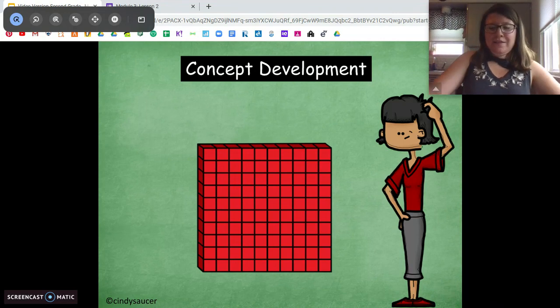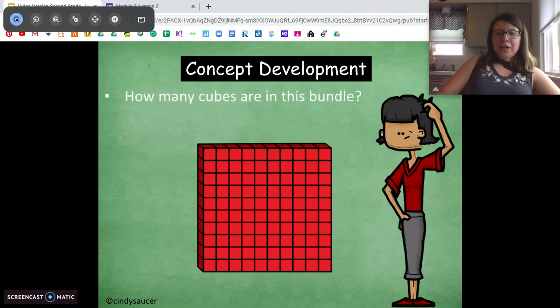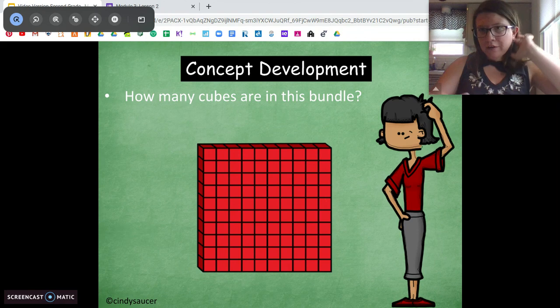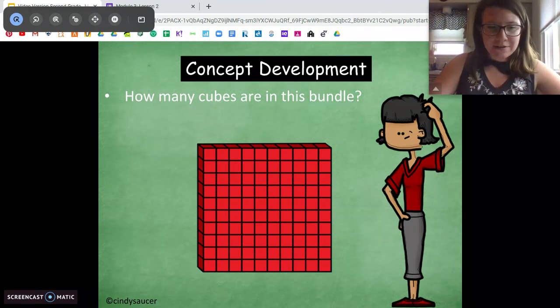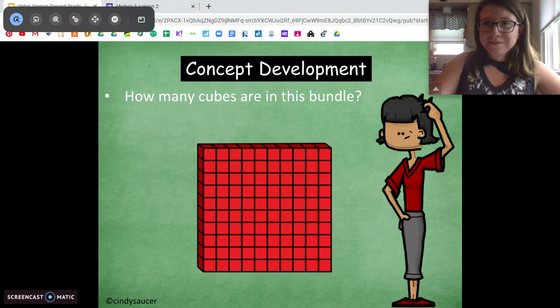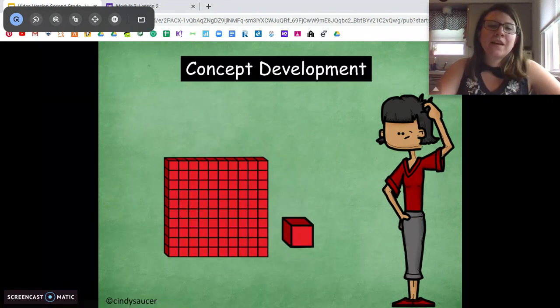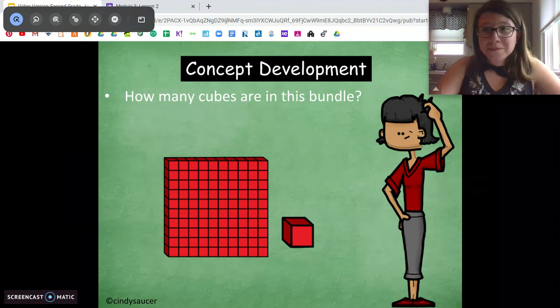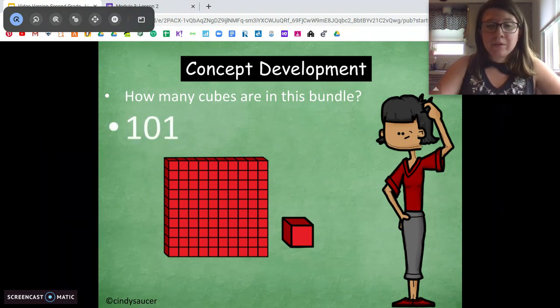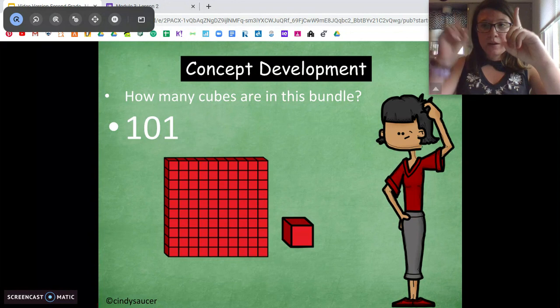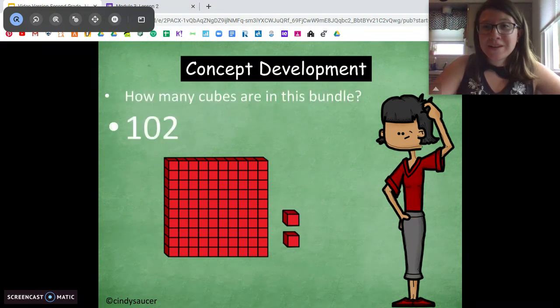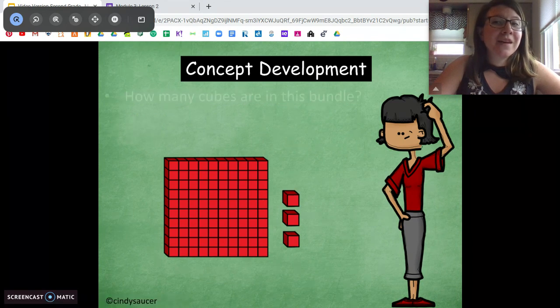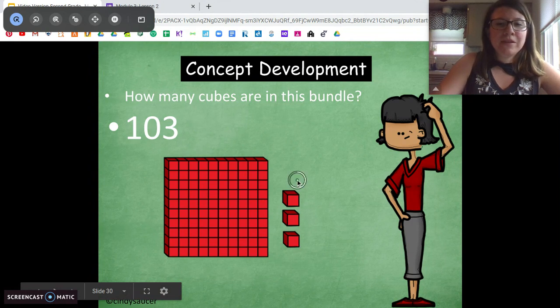Alright. Here we go. How many cubes are in this bundle? How many cubes is this? Remember, this is 10 tens. Very good. 100. Alright. How many now? 101. Very good. We have 100 and one one. 101. How many now? 102. Good. How many now? 103. 100 and three ones.